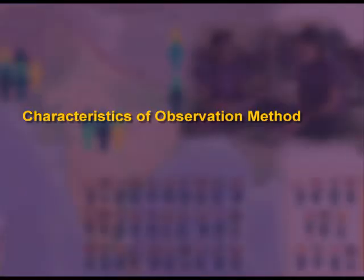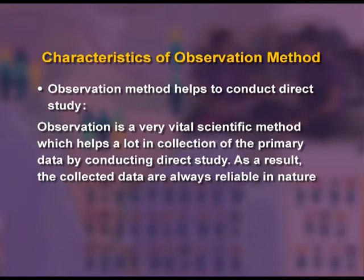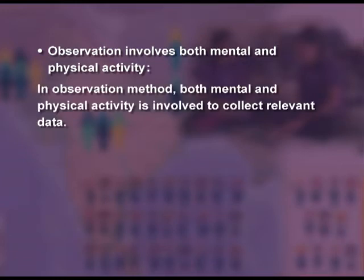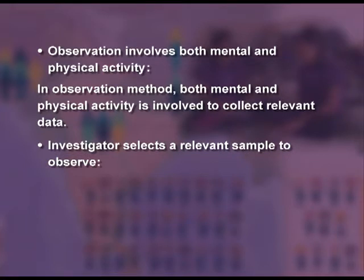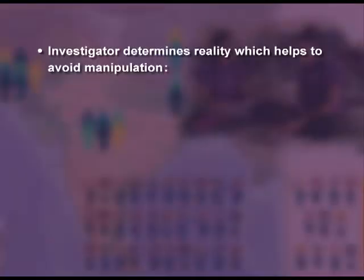Characteristics of observation method: Observation method helps to conduct direct study. It is a vital scientific method that helps in collection of primary data by conducting direct study, so the collected data is always reliable. Observation involves both mental and physical activity to collect relevant data. The investigator selects a relevant sample to observe on a selective basis. Observation also helps the investigator to determine reality, which helps to avoid manipulation.